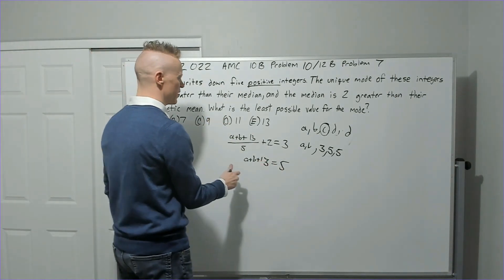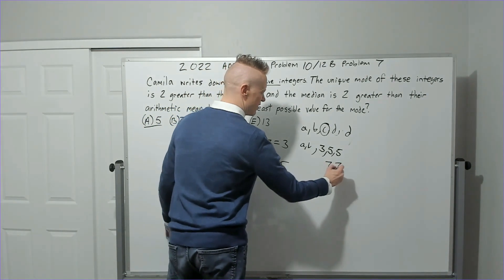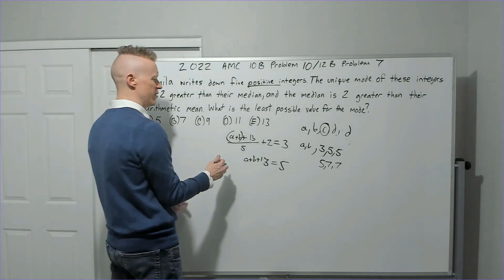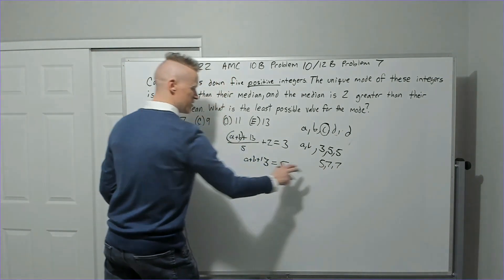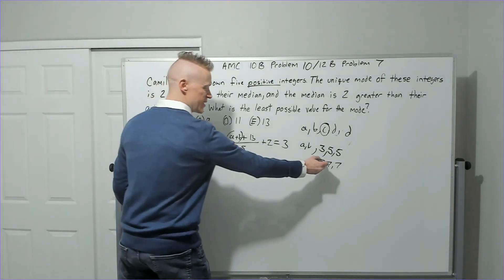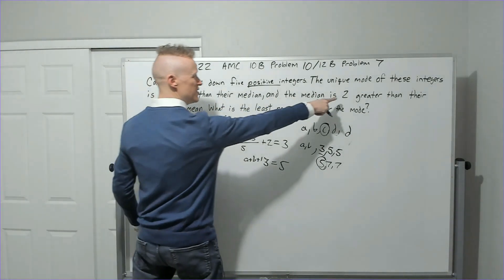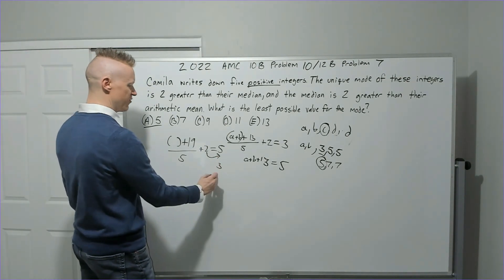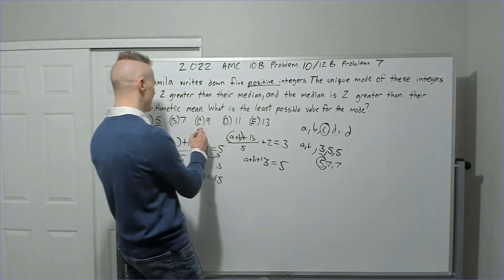Try mode = 7: values are a, b, 5, 7, 7. We need (a + b + 19) / 5 + 2 = 5. So a + b + 19 = 15, giving a + b = −4. That's impossible with positive integers. Try mode = 9: values are a, b, 7, 9, 9. We get (a + b + 25) / 5 + 2 = 7, so a + b + 25 = 25, meaning a + b = 0. Also impossible.